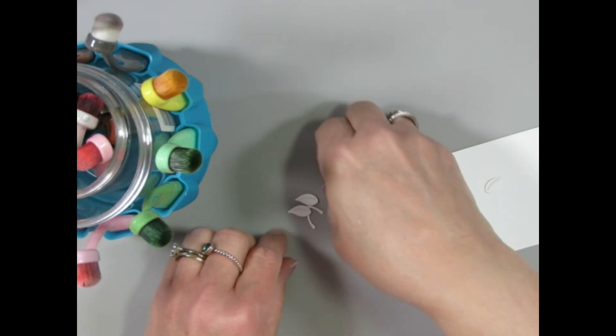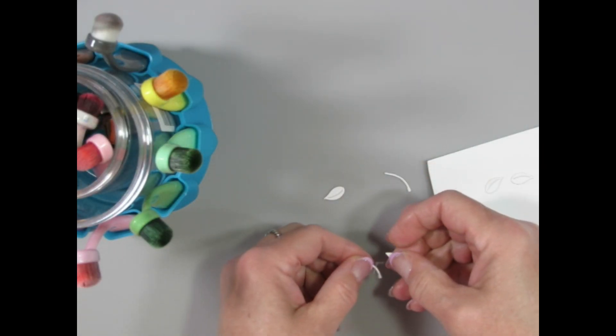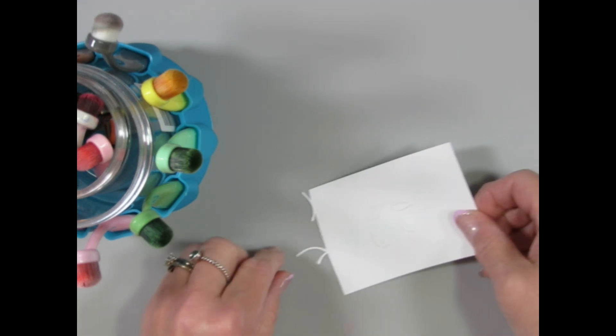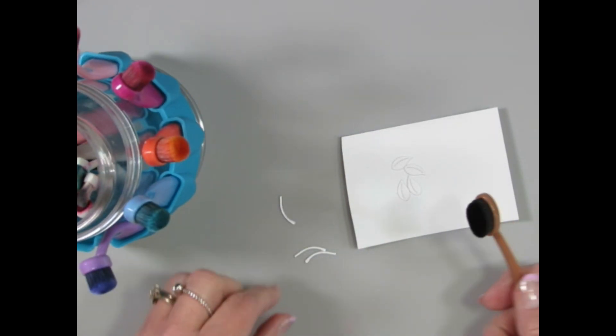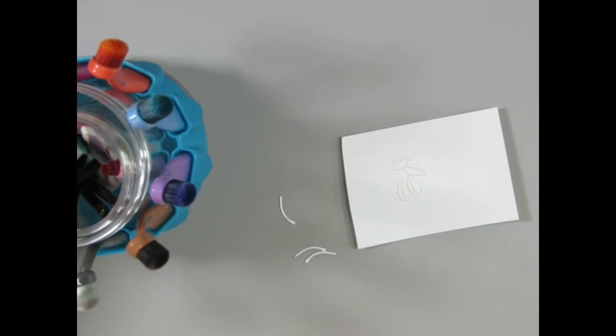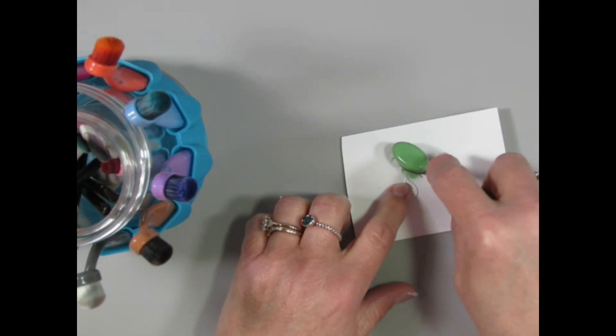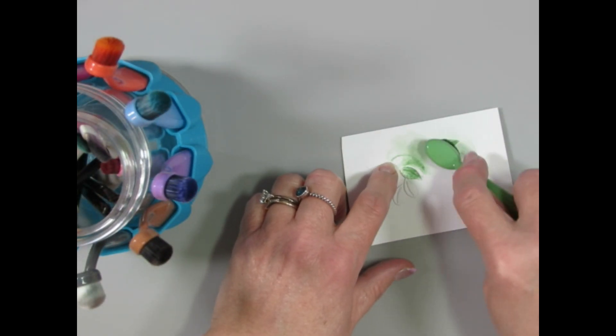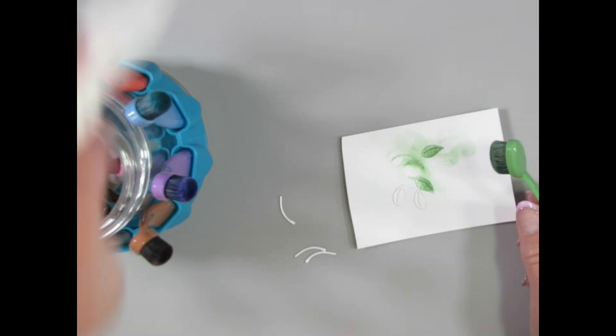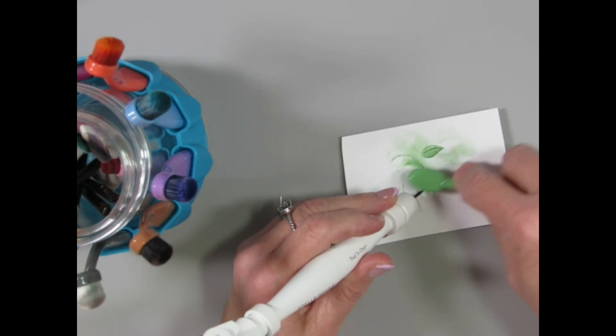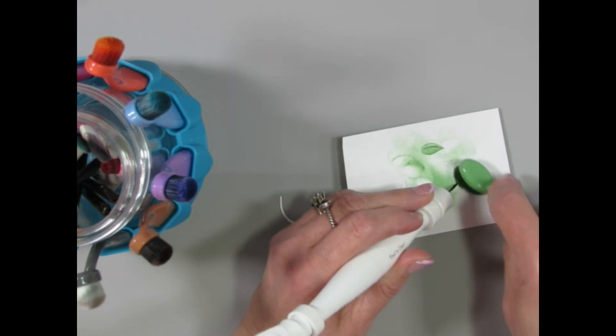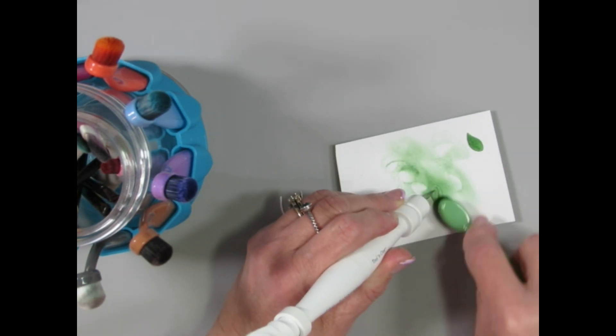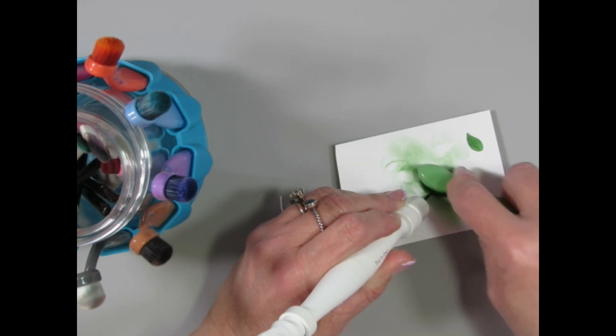I cut the leaf and the stem for the cherry out with white cardstock and I'm just going to use my blending brushes to color these. I'm going to use brown for the stem and green for the leaf. I'm just using whatever ink was left over on my brush from the last time that I ink blended. I'll go ahead and fast forward this for the sake of time.